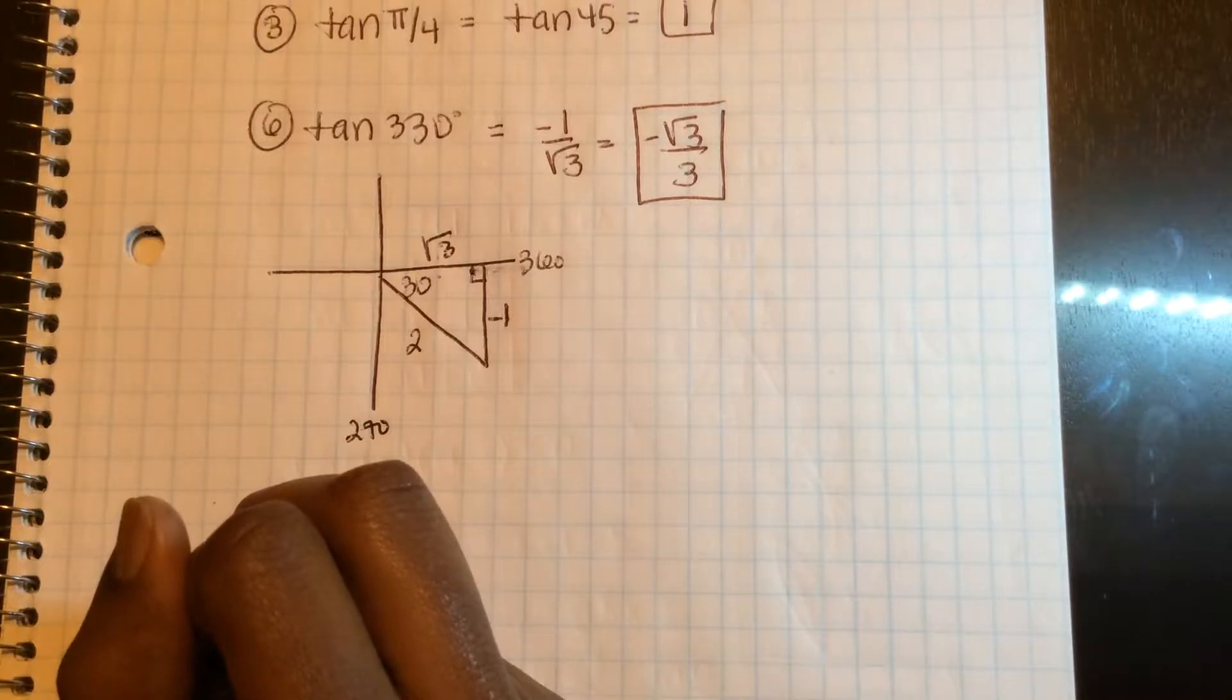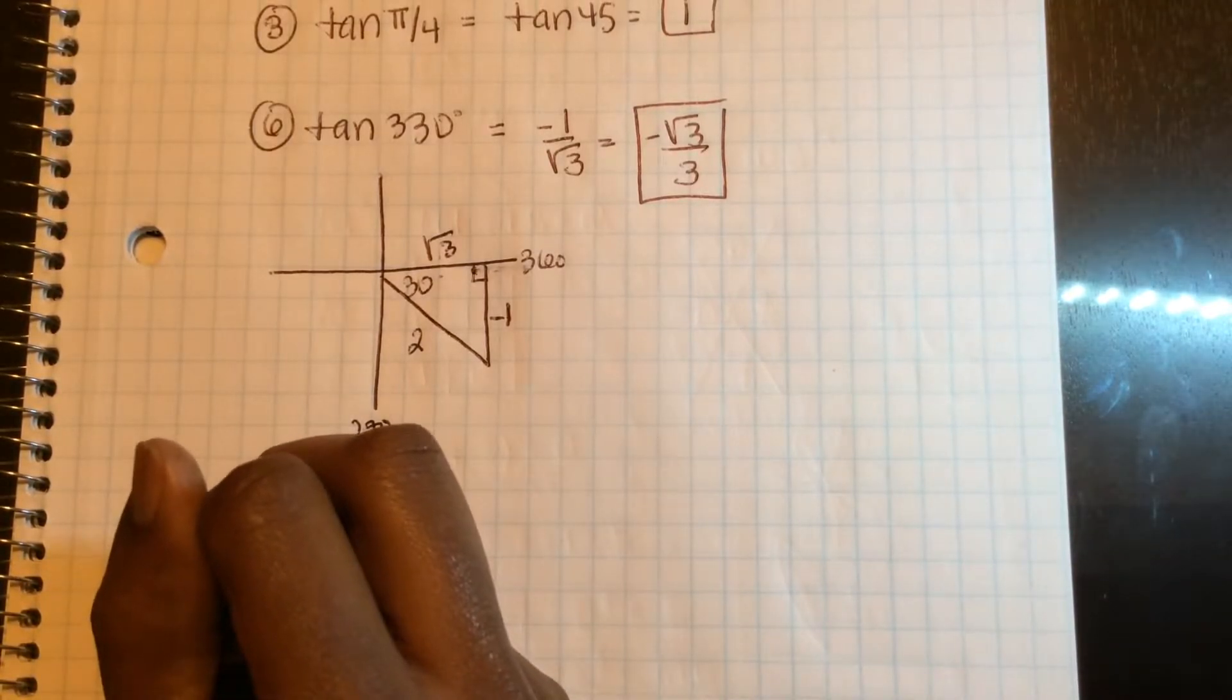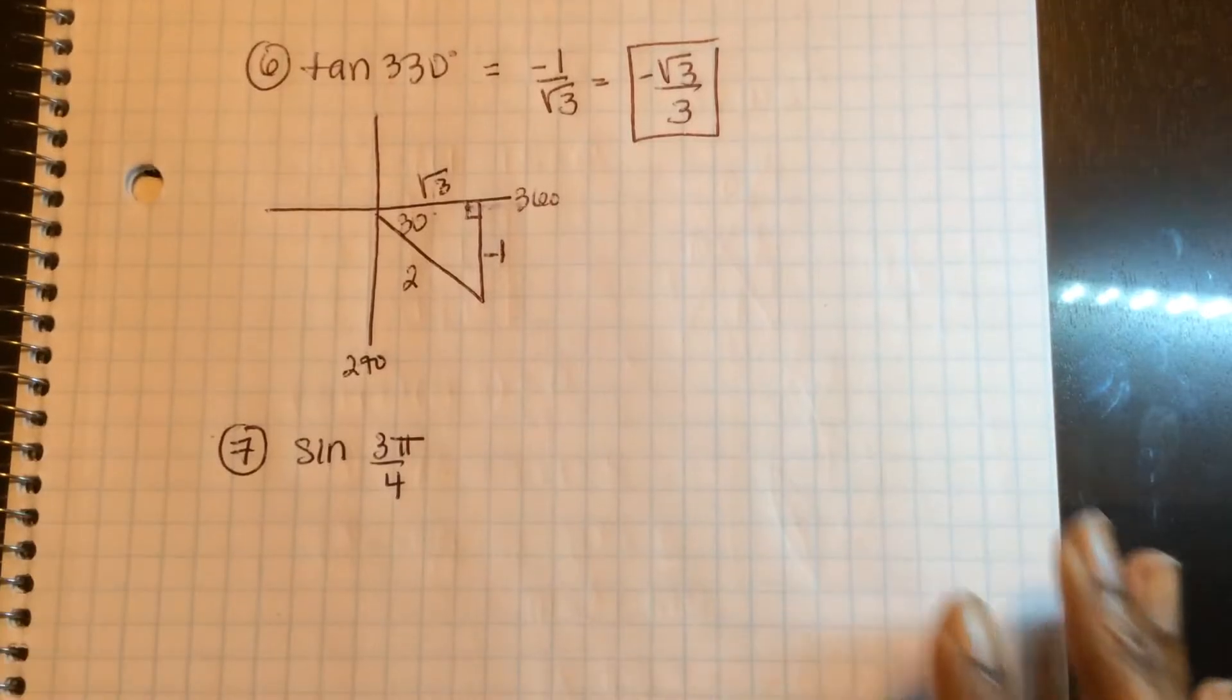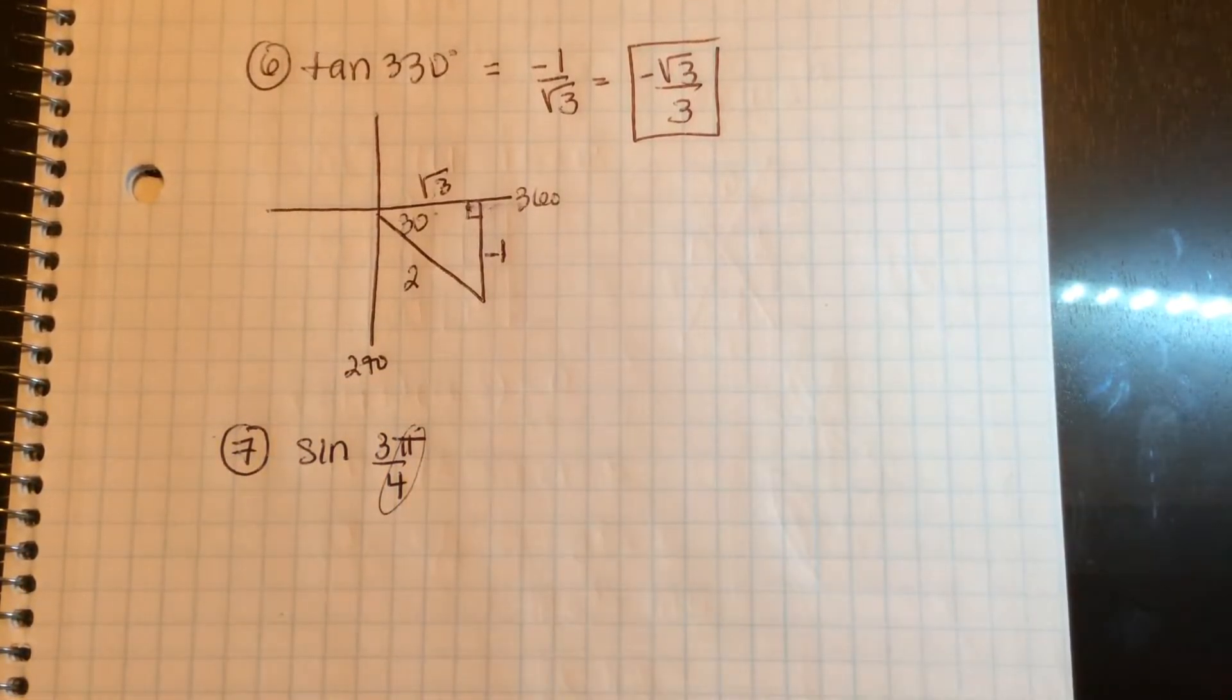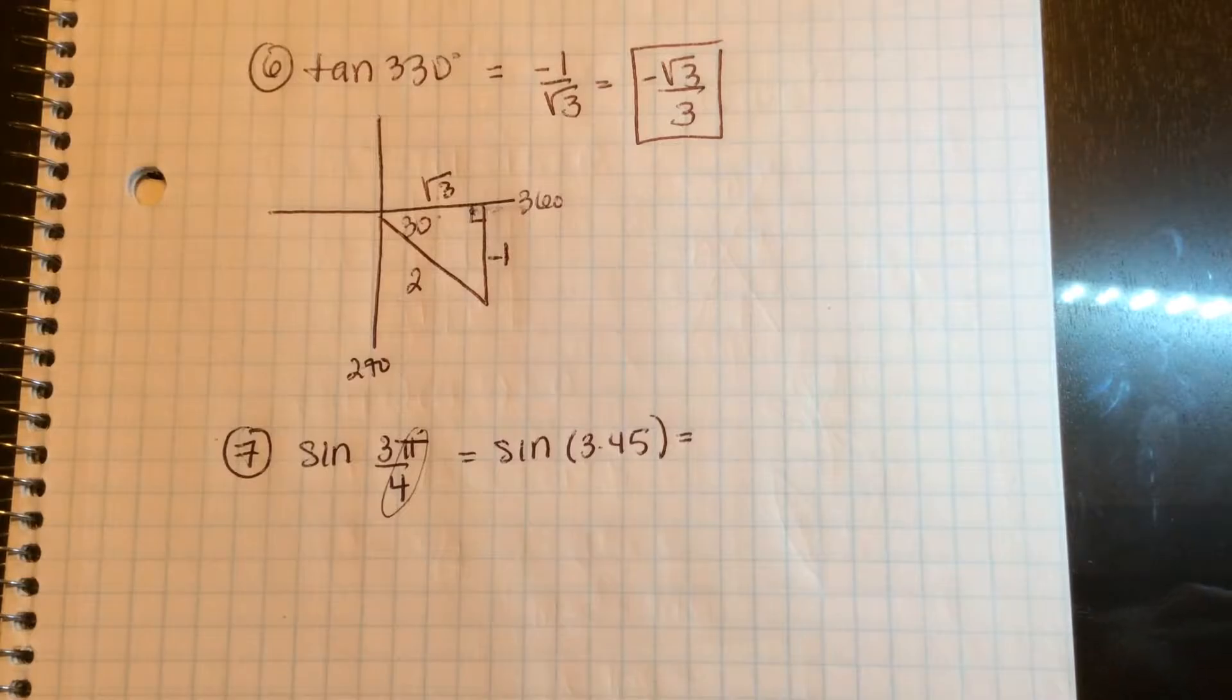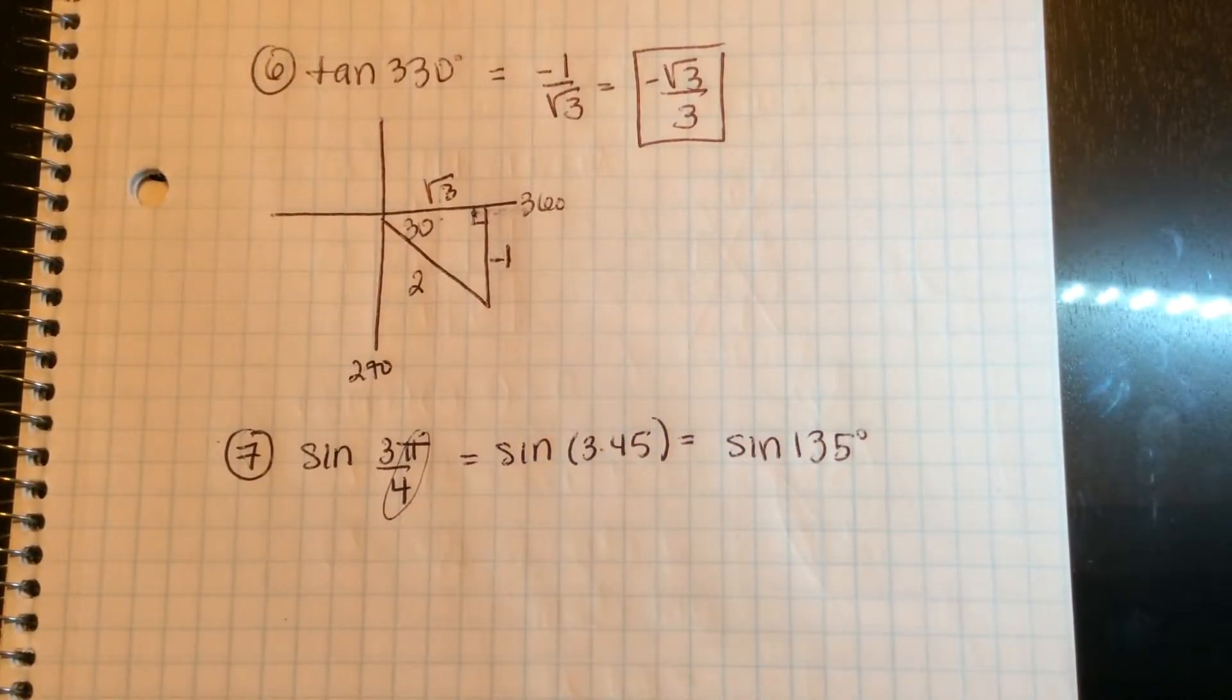Another one like that is number 7, sine of 3π over 4. Well, what is 3π over 4? First, I see my reference angle is π over 4, so that's 3 times 45. Well, that's the same as sine of 135 degrees.